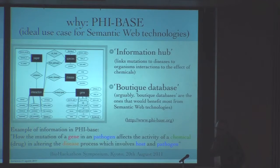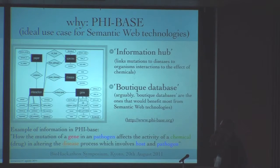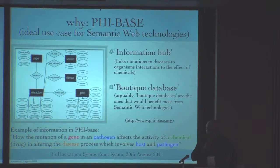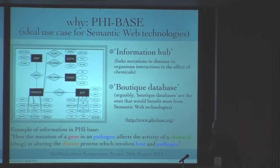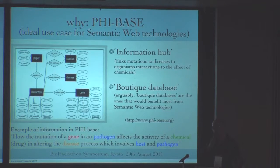PHI-base is a small database I worked on during a lot of research, and I thought it was an ideal use case to test semantic web technologies. First of all, it is an information hub — a database that connects disease and organism, and contains information on the effect of chemicals, how these chemicals affect pathways, due to gene function, pathogenesis, and so on. So it connects a lot of different kinds of information.